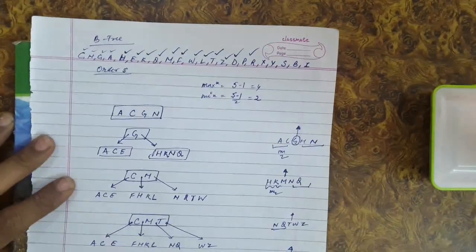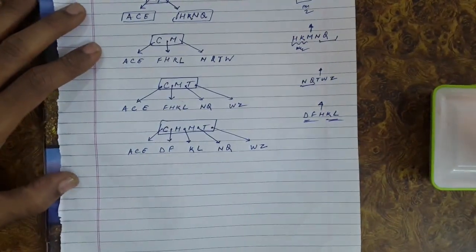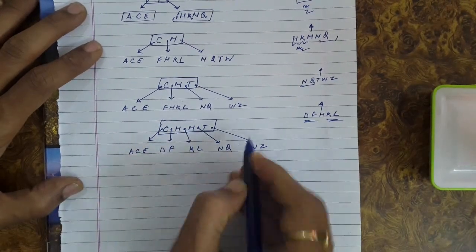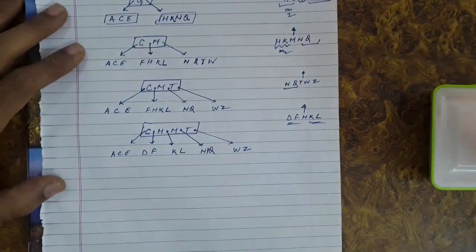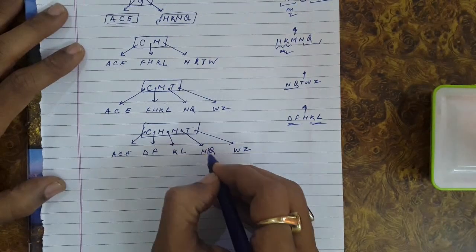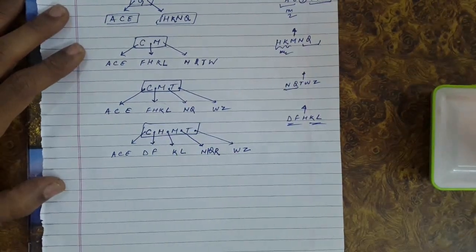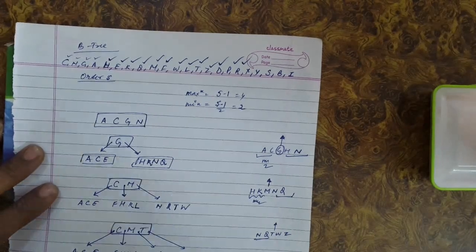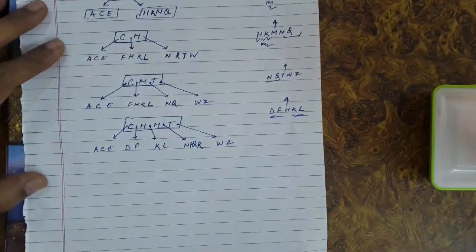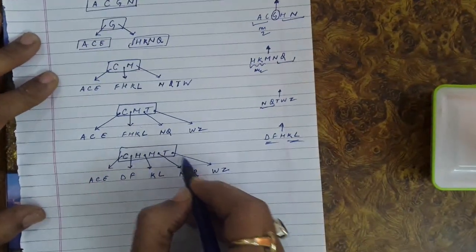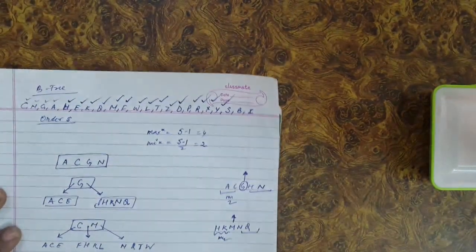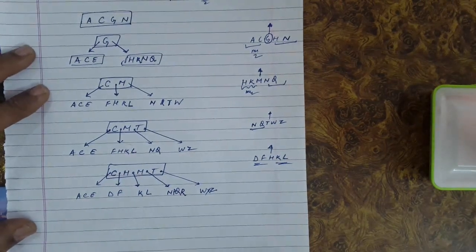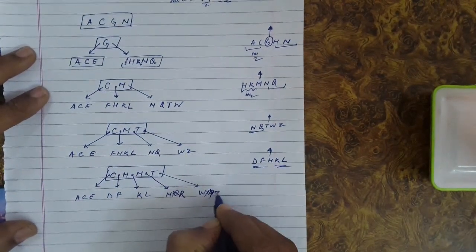Now let us insert P — P, Q, R, S, T — it will come in that node. Next key is R, so R, S, T — R will come there. The next key is X, which is greater, so it will come in the W, Z node. Next key is Y, so inserting Y gives W, X, Y, Z.